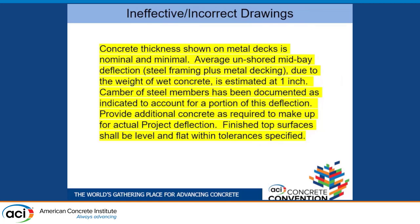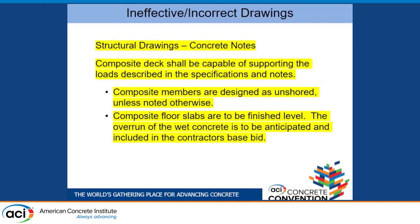Then I see specifications like this: 'Concrete thickness is nominal and minimal. Due to the weight of wet concrete, deflection is estimated to be about an inch. Camber has been documented as indicated. Provide additional concrete as required to make up for actual project deflection.' The problem is this project had different bay sizes and different framing situations — both cambered and un-cambered girders and beams. How the heck do you know what's going to happen?